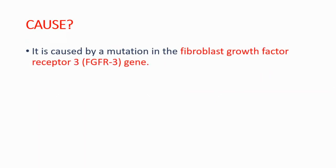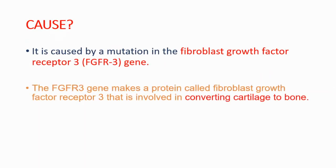In achondroplasia, the cause is an FGFR3 gene mutation. This FGFR3 gene works by converting cartilage to bone.